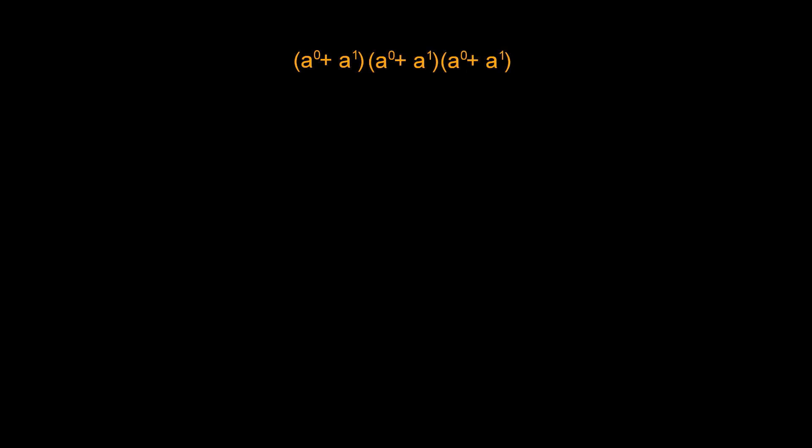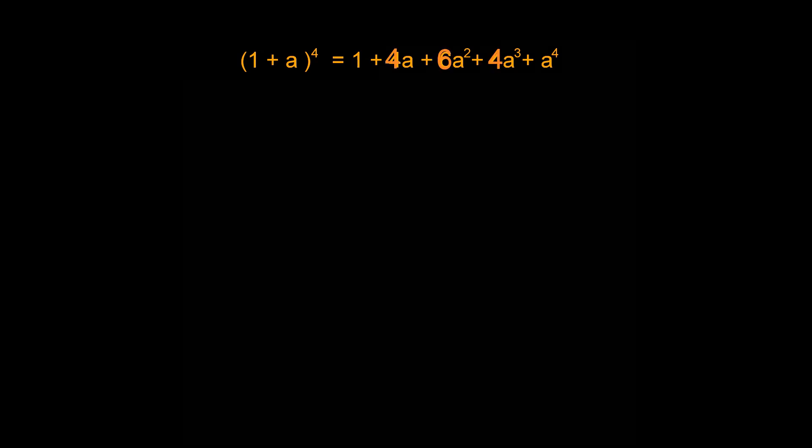This time we'll need to start with the algebra. Let's say each axis can take two values 0 and 1 and we'll need four terms because this is 4d space. Let's recognize this as 1 plus a to the power 4 and write out the algebraic expansion. Now what interesting shapes will our three coefficients form?